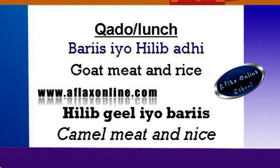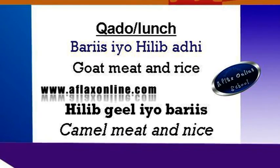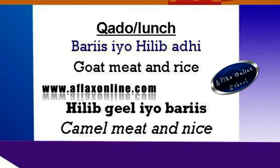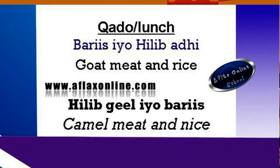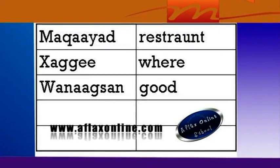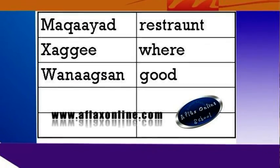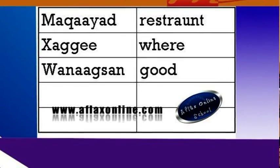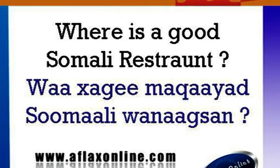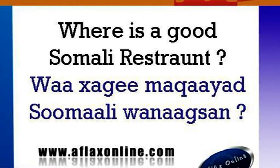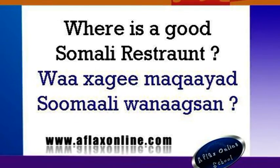Goat meat and rice — rice is 'baris.' 'Hilib geel iyo baris' — that means camel meat and rice. A few other useful words: 'maqaayad' — a restaurant. 'Waa hage' — good location. If you want to say 'where can I get a good Somali restaurant,' you can say: 'hage xilliga helakara maqaayad Somali wanaagsan.'